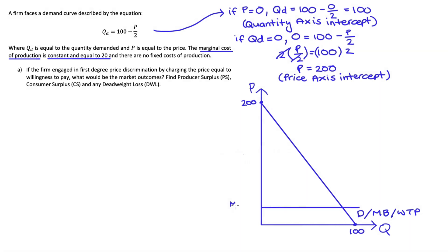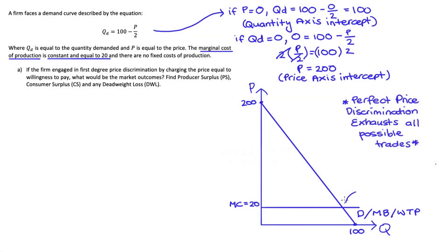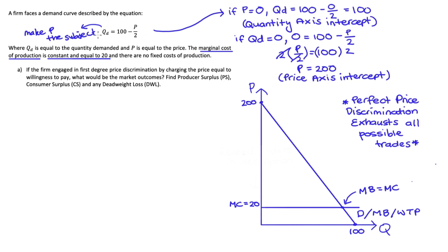When a firm perfectly price discriminates, they're going to exhaust all possible trades, producing right up to where demand or marginal benefit equals marginal cost. To find the quantity at this intersection, we need to set demand equal to marginal cost. I'll first work with our demand equation and make price the subject — because marginal cost is measured on the vertical axis, I need price isolated on the left-hand side.